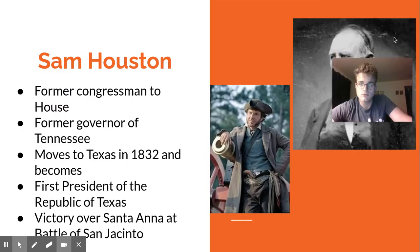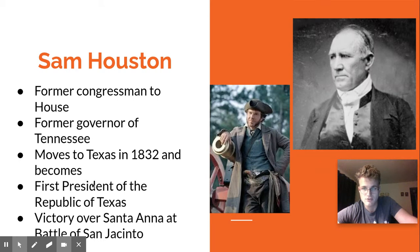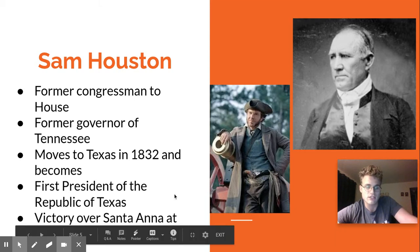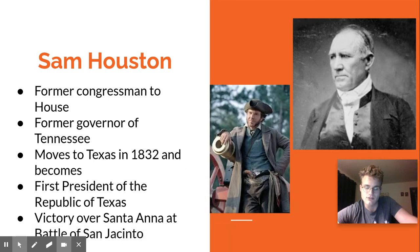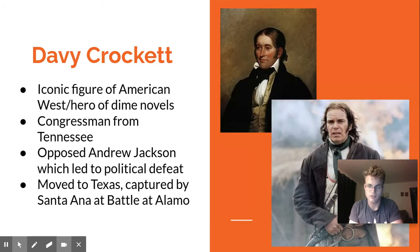Characters in the film: you have Sam Houston, who was a former congressman from Tennessee and also a governor of Tennessee — very well-known across the entire country. You'll hear in the film that he was almost a presidential prospect. He moves to Texas in 1832 and becomes the first president of the Republic of Texas after Texas wins the war. Sam Houston is going to be directly credited with the 18-minute victory over Santa Ana at San Jacinto, where Houston basically tricks Santa Ana — who loves to believe he's Napoleon — into doing his own Waterloo.